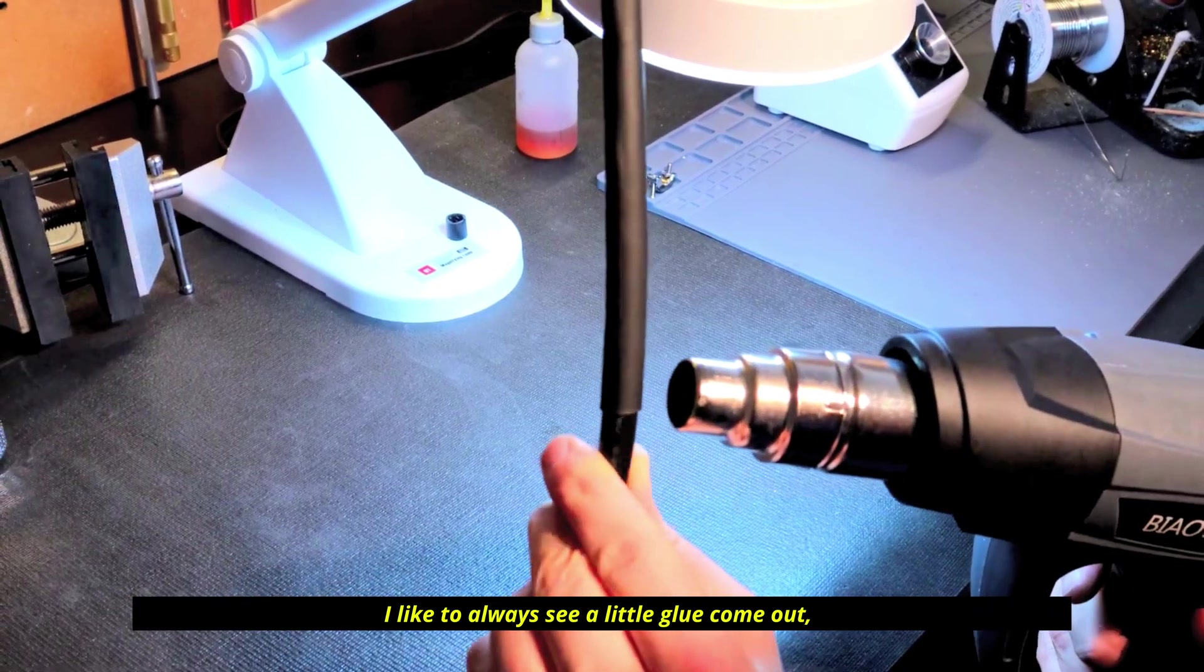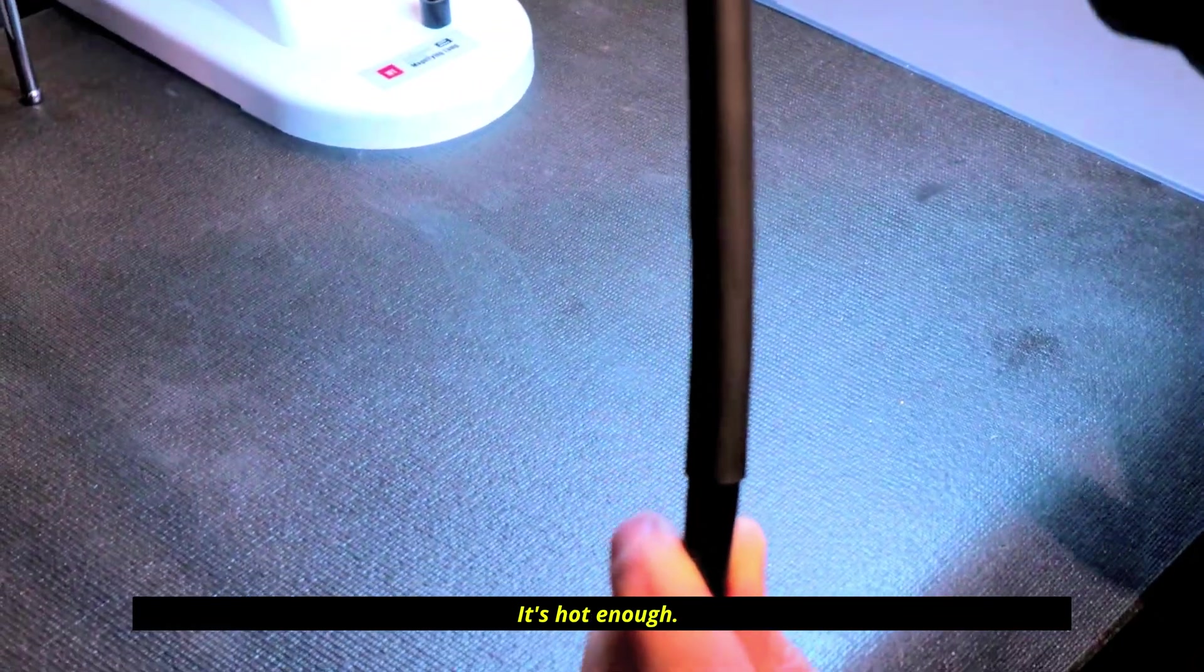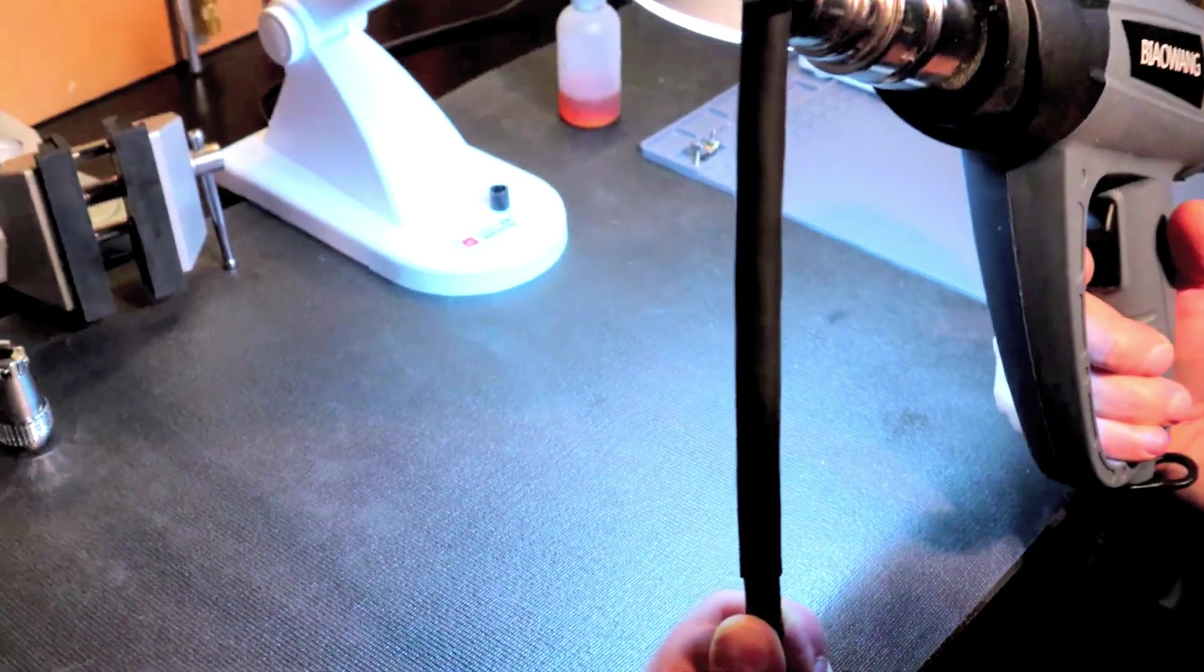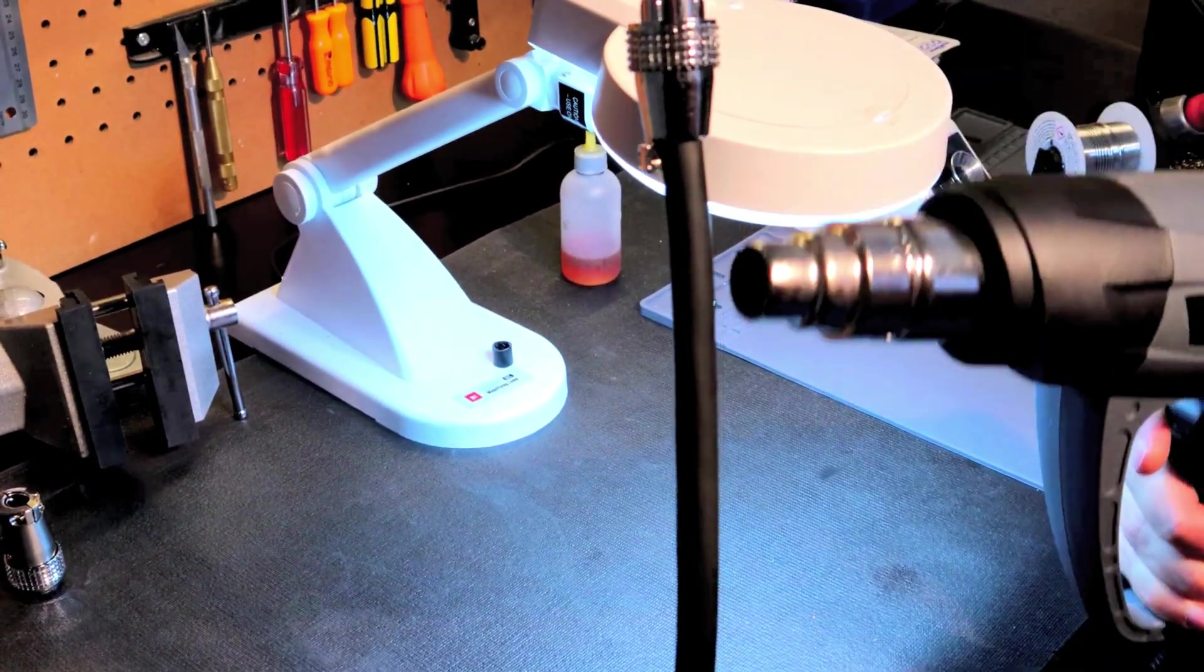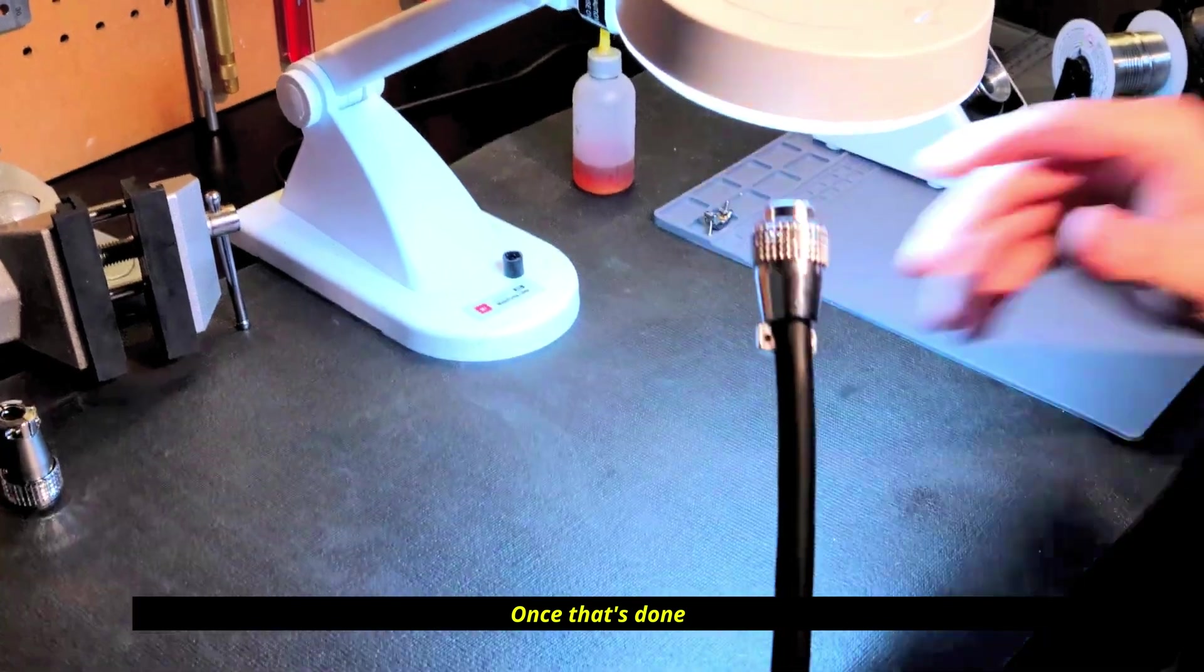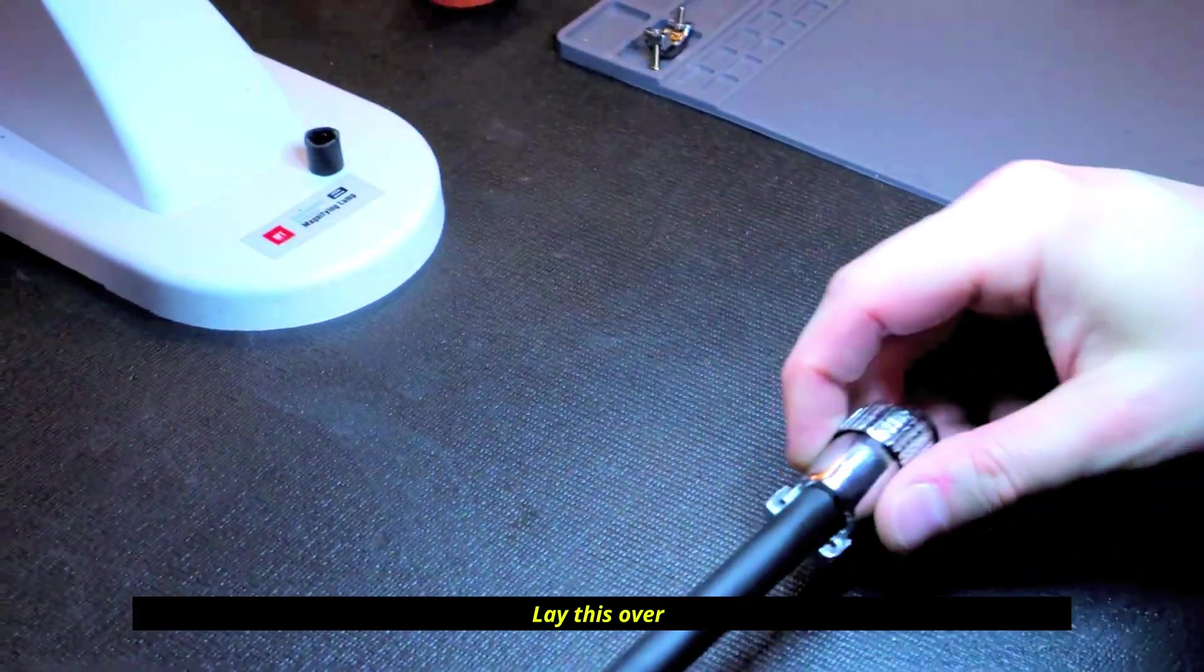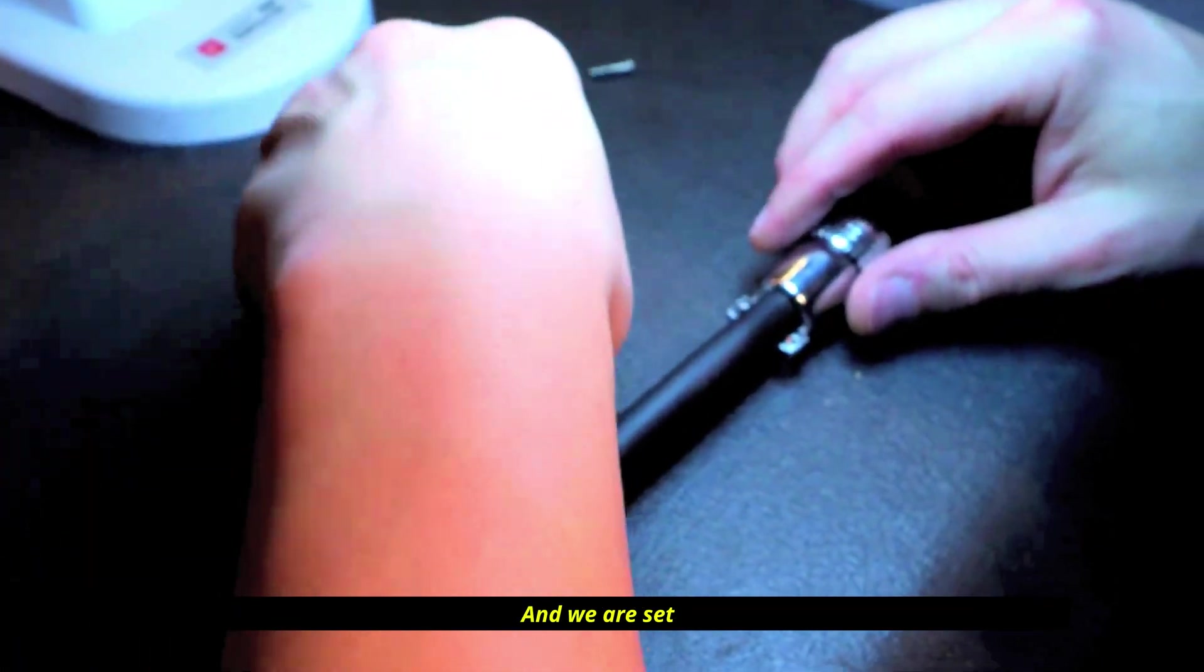I like to always see a little blue come out and I know it's sealed there if it's hot enough. Once that's done, center everything, make sure you're straight, and now what we're going to do is put our joining piece and we are set.